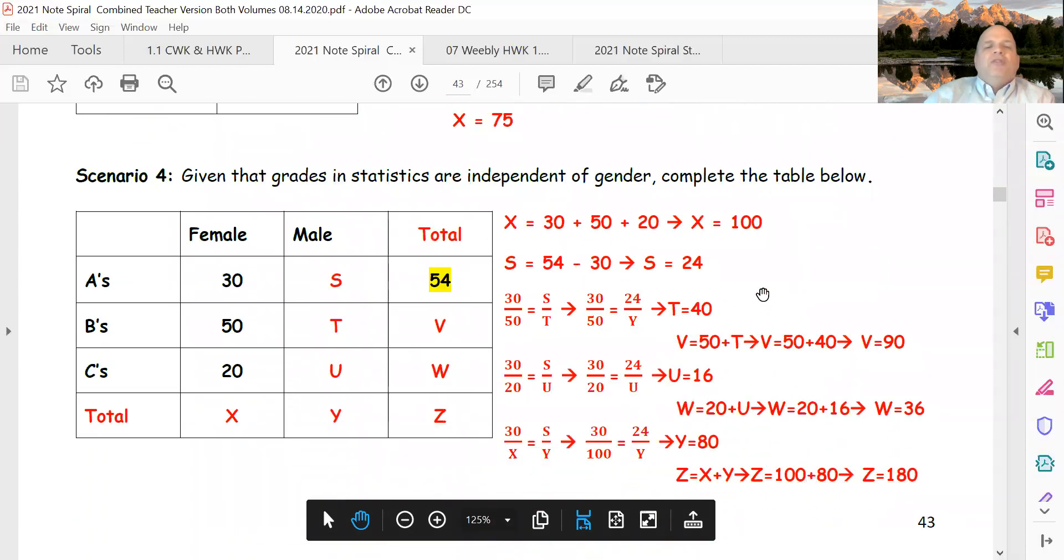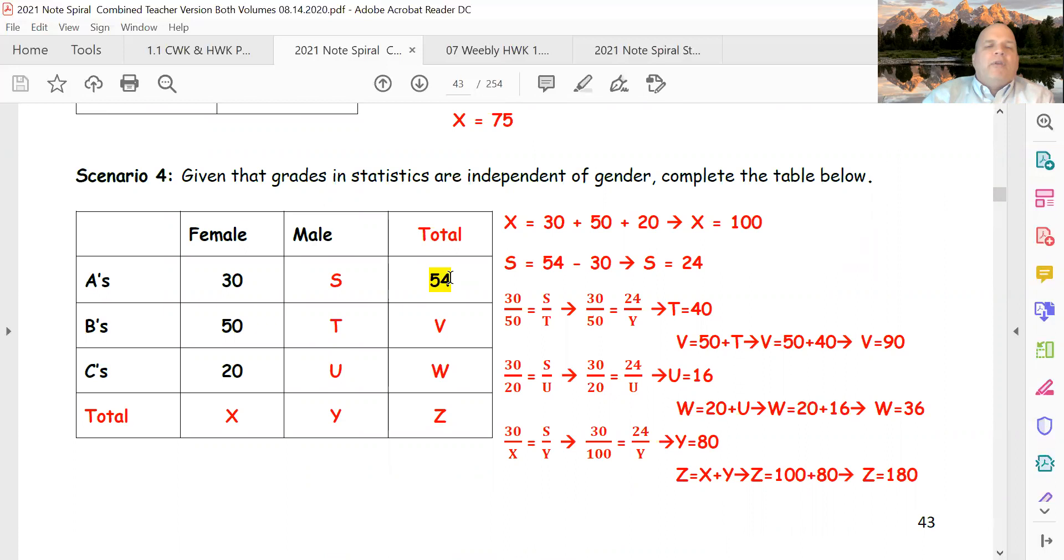This problem right here is based on that same thing. Given that they're independent, solve. Unfortunately there's a typographical error and you don't have that 54. You need to have the 54, so I'm giving you the 54. Without the 54 you can't solve the problem; with the 54 you can.